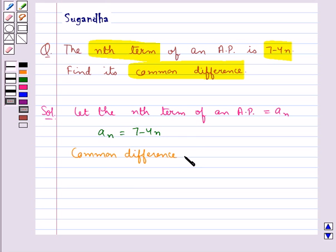that we usually denote by D is equal to an, that is the nth term, minus a(n-1), that is the (n-1)th term.